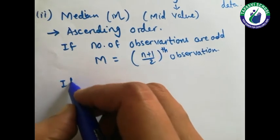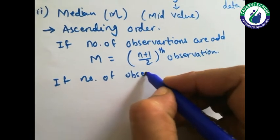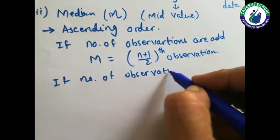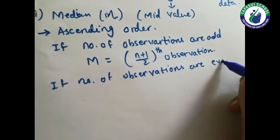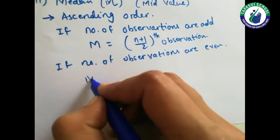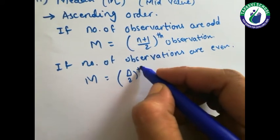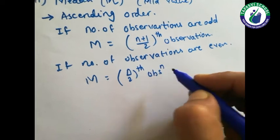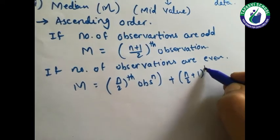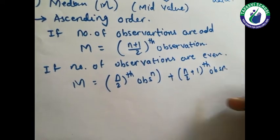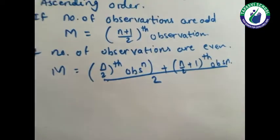If the number of observations is even, then we find out the median using the formula: the average of the (n upon 2)th observation and the (n upon 2 plus 1)th observation, that is, their sum divided by 2. This way we get the median of the data.